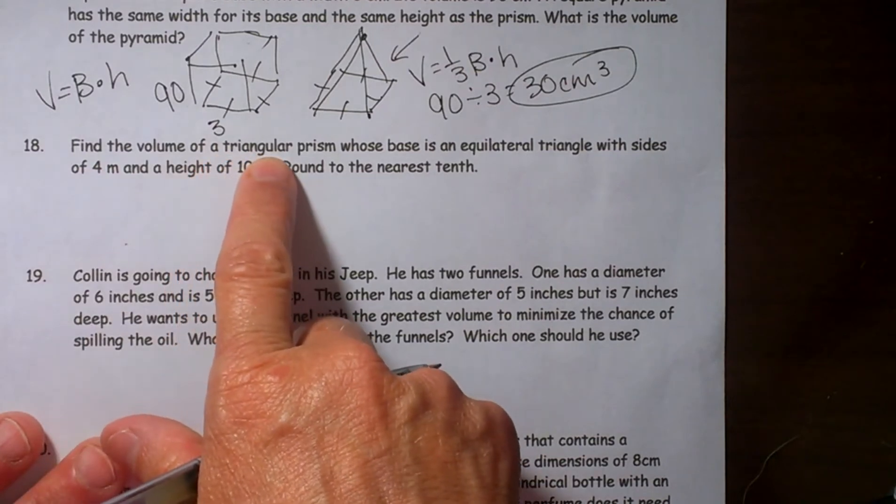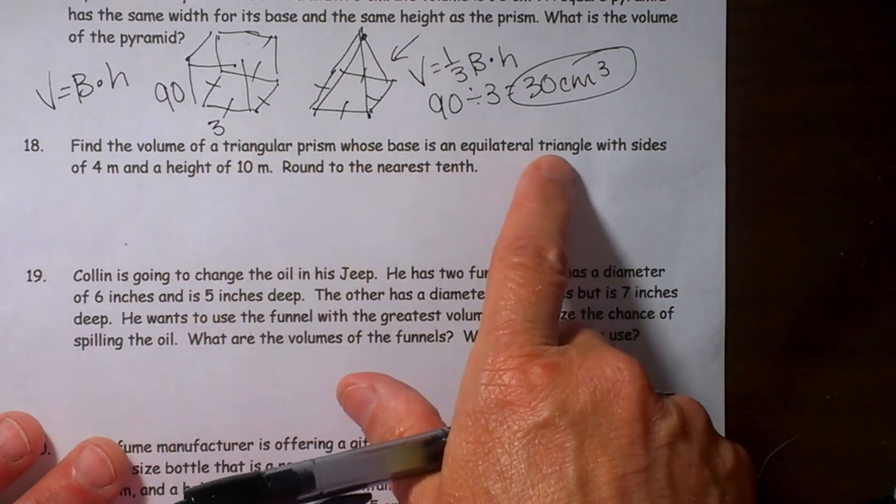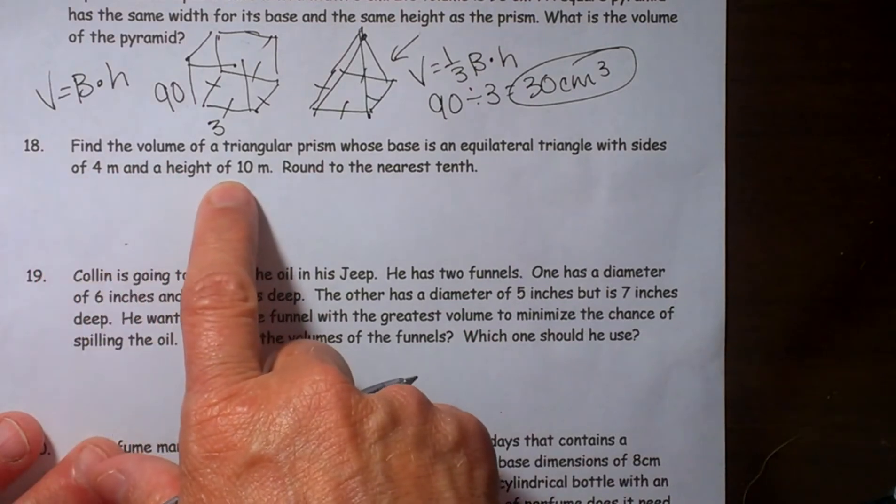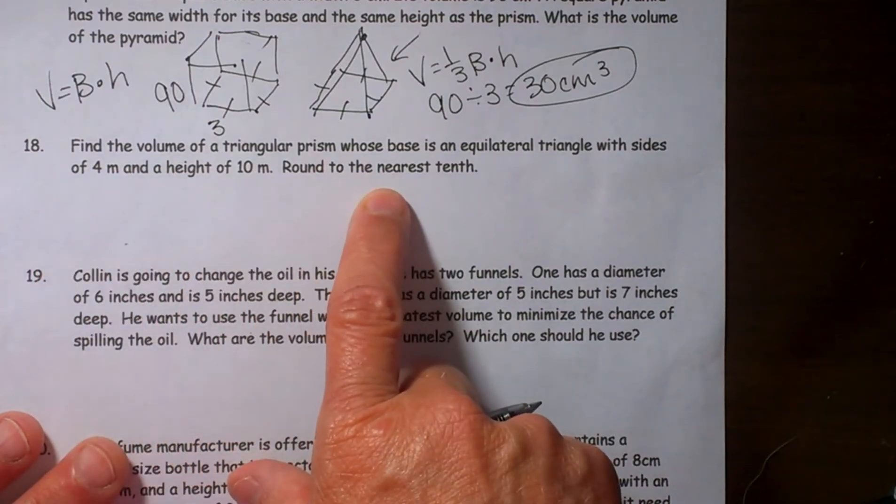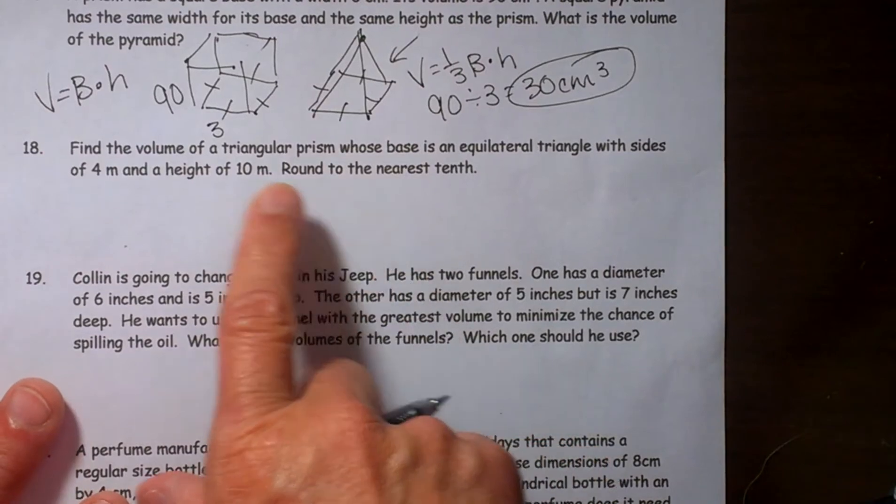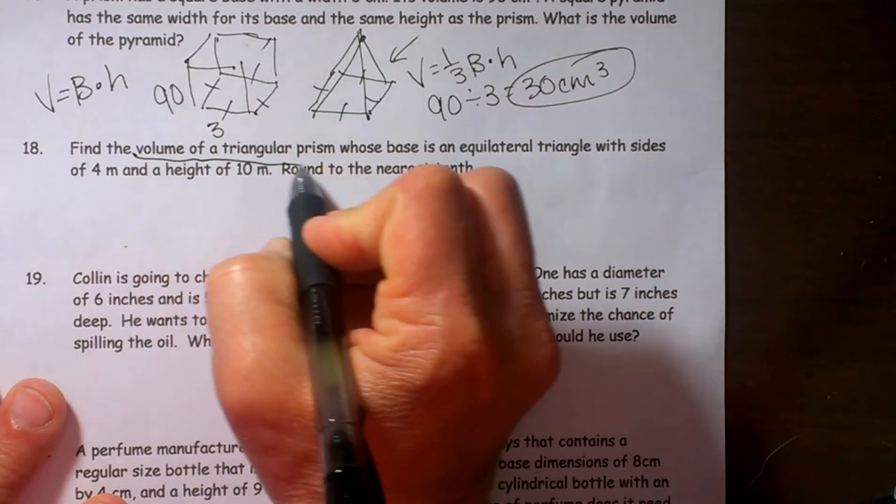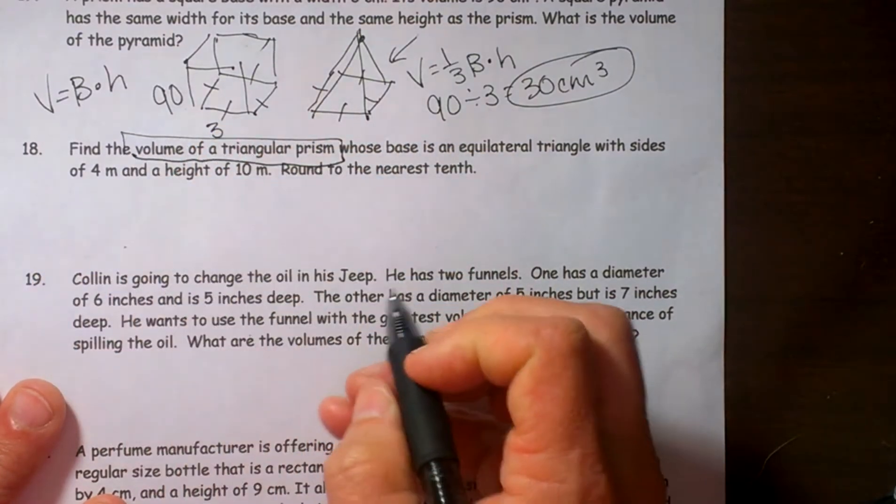The volume of a triangular prism whose base is an equilateral triangle with sides of four and a height of ten. Round to the nearest tenth. Okay, so this time we are finding the volume of a triangular prism. Let's draw a triangular prism.